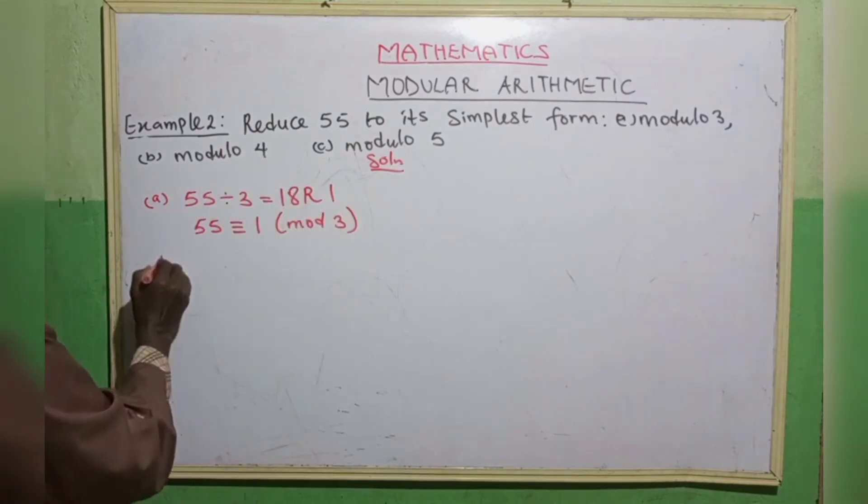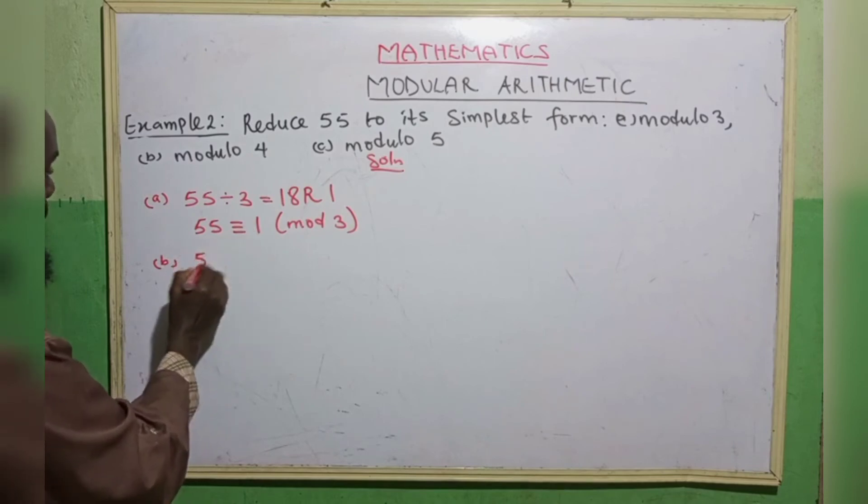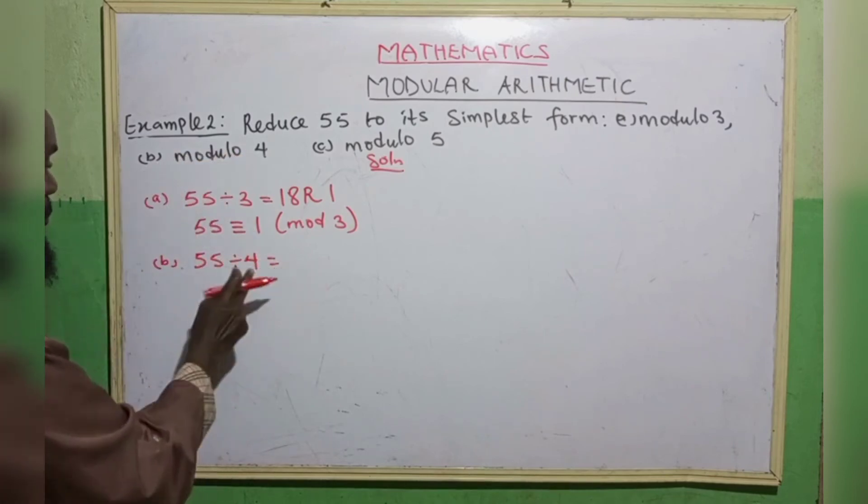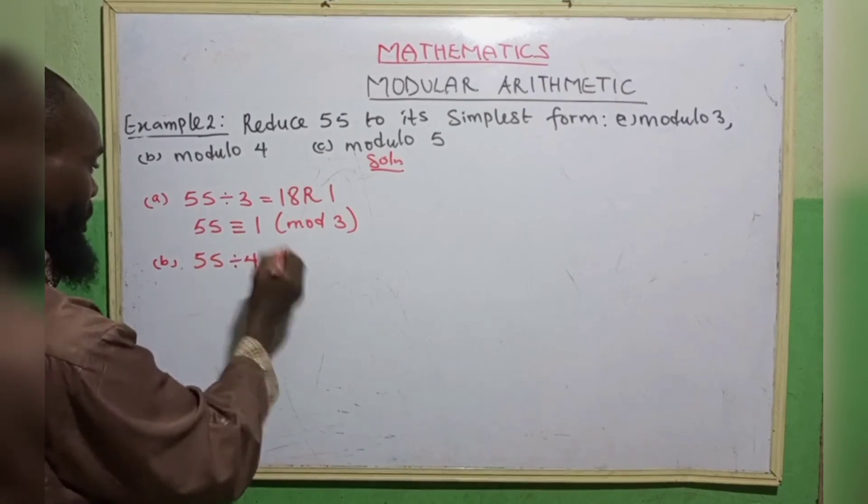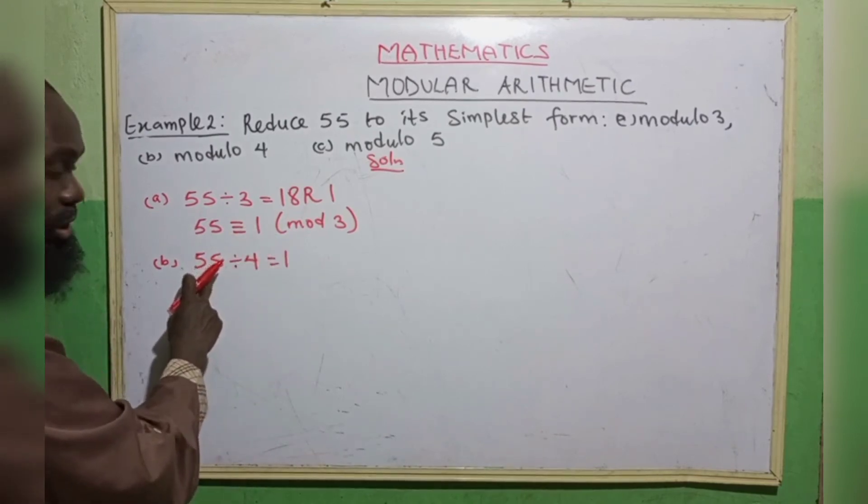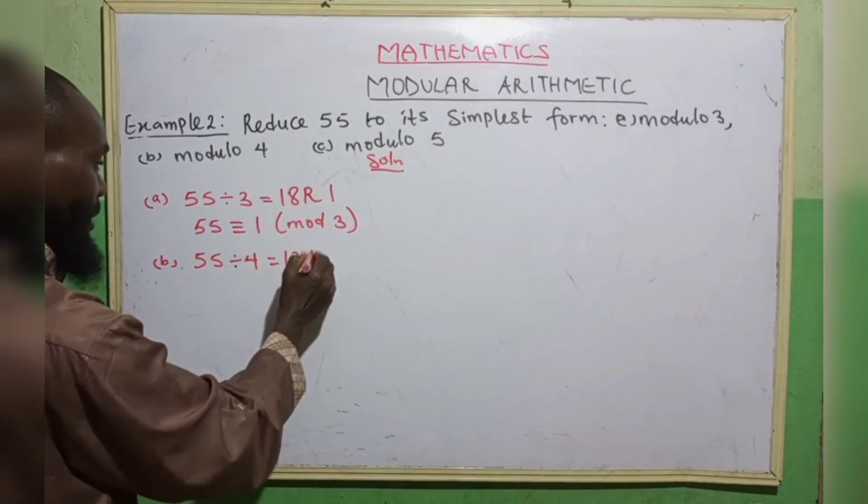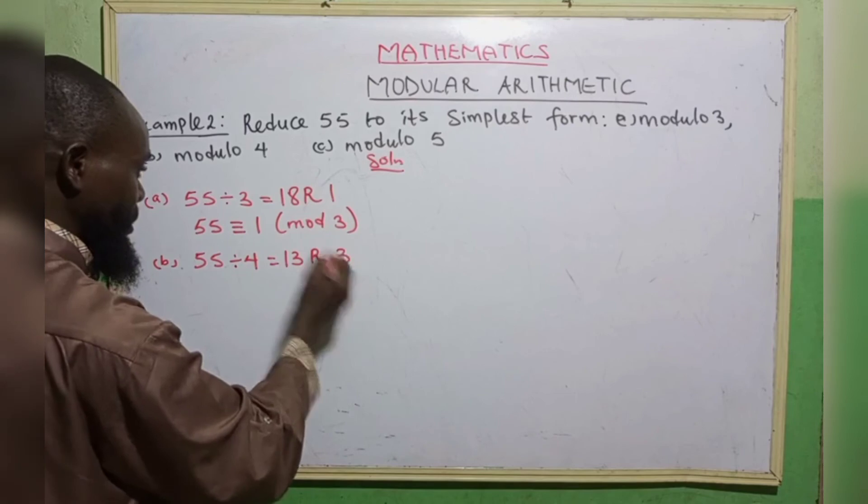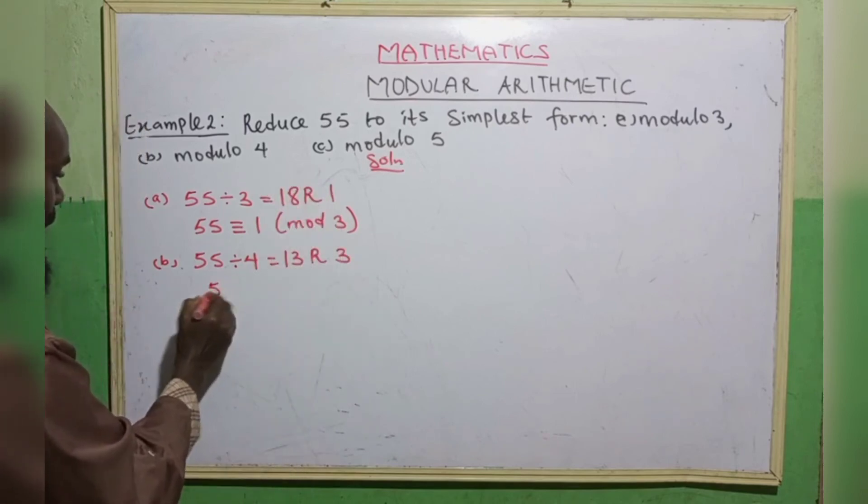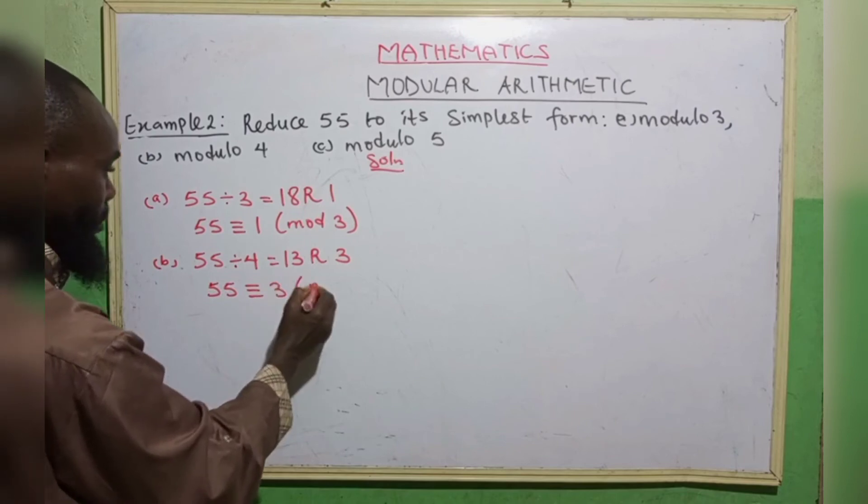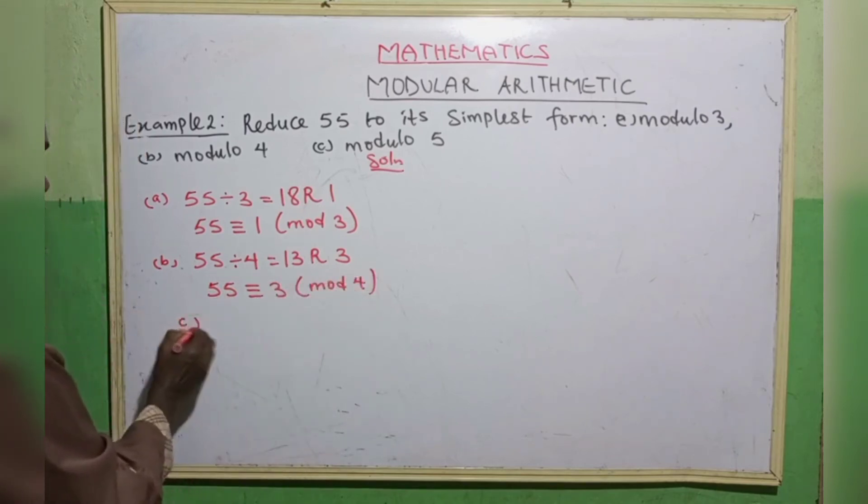The second one, b, 55 divided by 4. 4 goes in 55. We have 11. Remainder 0. We have 15. 4 goes in 15. We have 15. We have 15, that is 12. Remainder 3. So which means 55 can be equivalent to 3 in modulo 4.